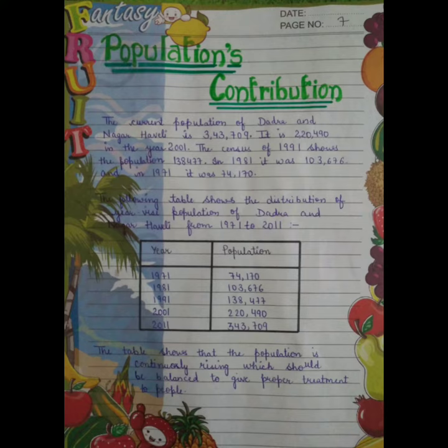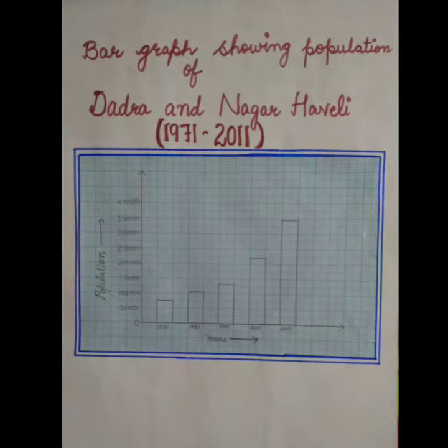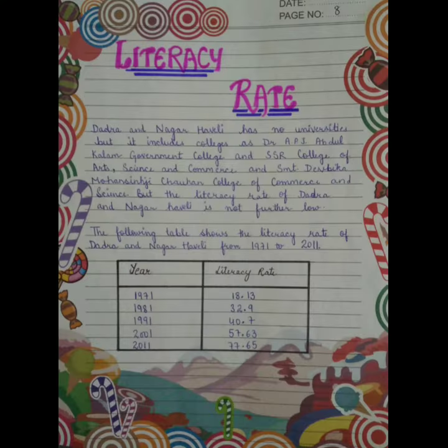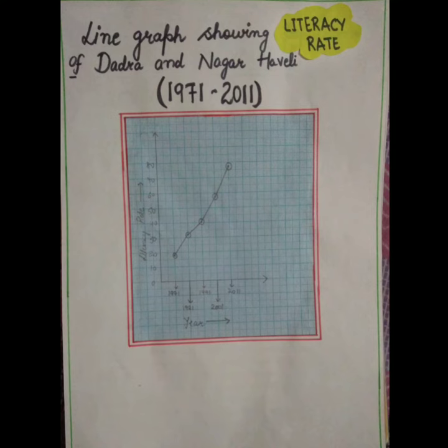Our next focus was on the Nakshatra Garden, which is very famous for its beautiful and amazing symmetry. Our next concentration was on the population and literacy rate bar graph and line graph for Dadra and Nagar Haveli, which has changed significantly over the years.